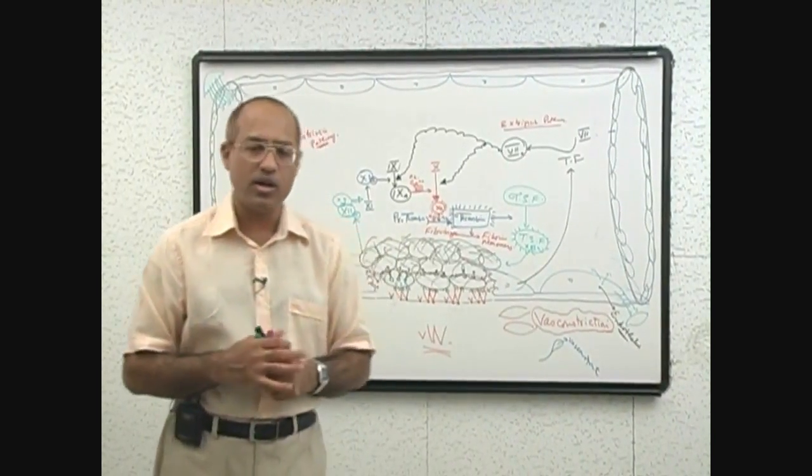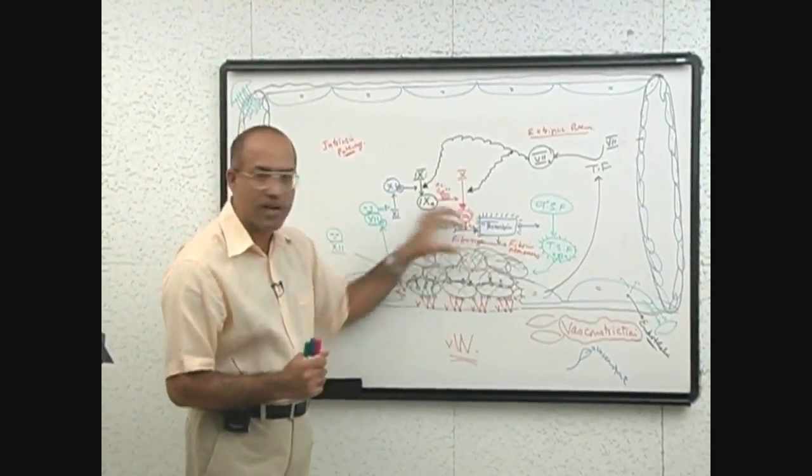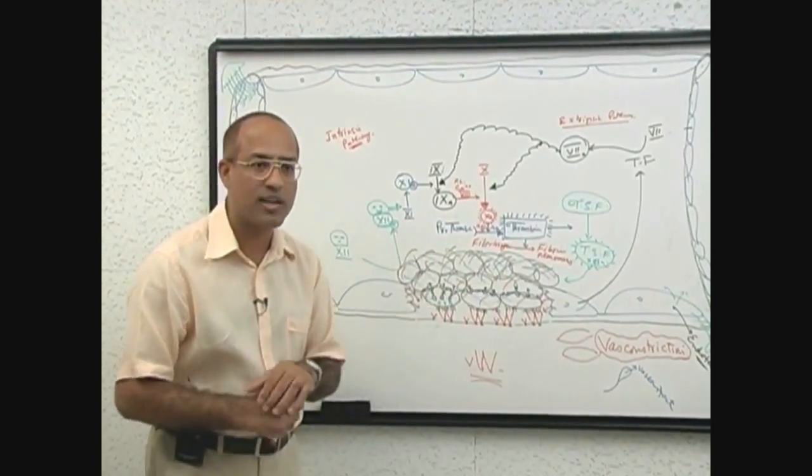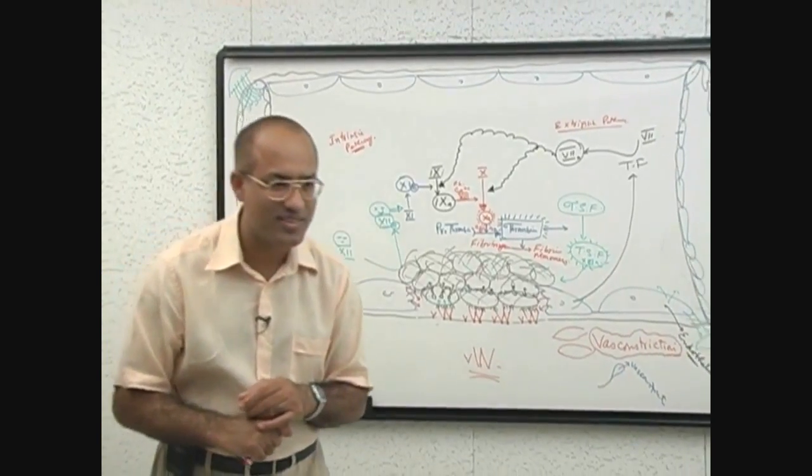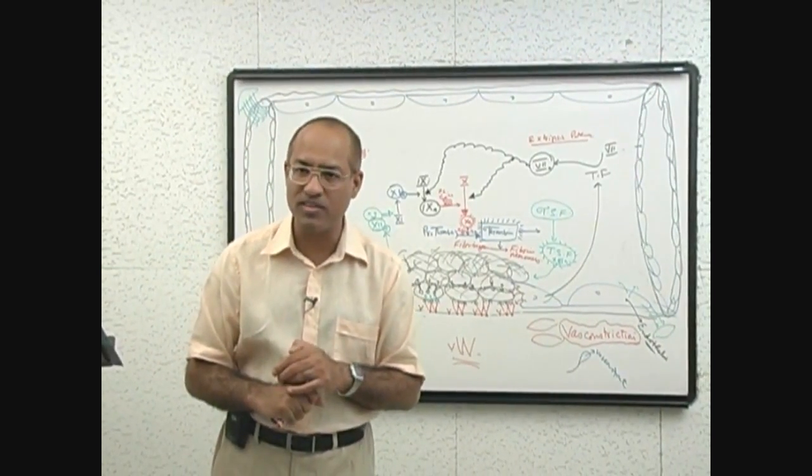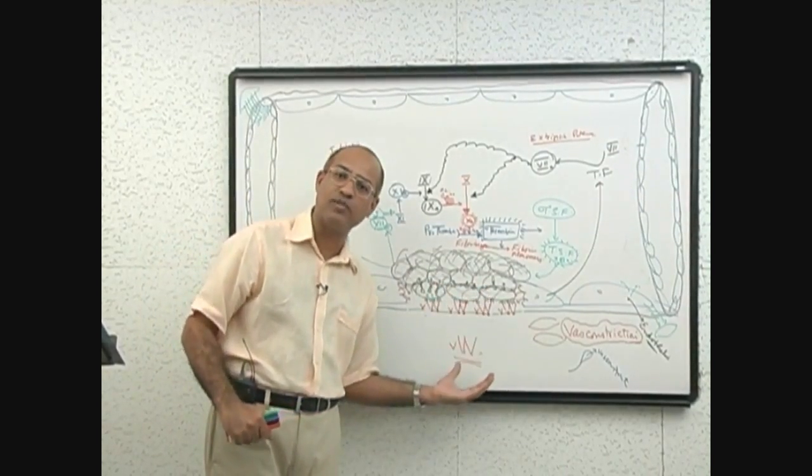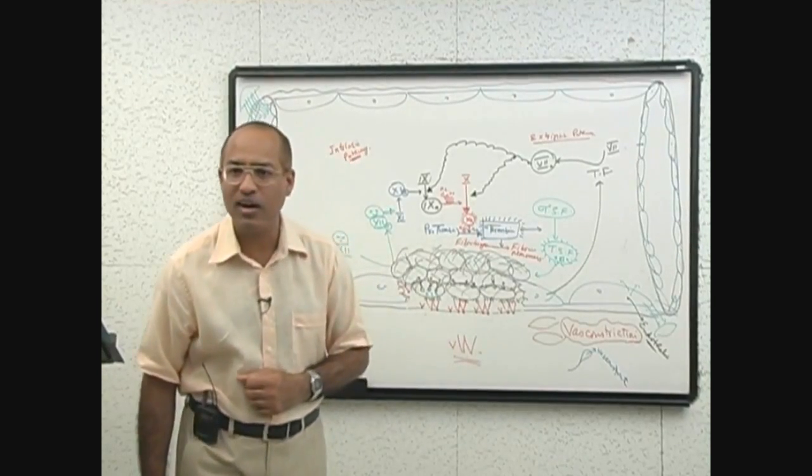Now if secondary platelet plug is quite big and it is present within the circulation, we call it thrombus. And if the same plug is outside the cardiovascular system, it is called a clot.